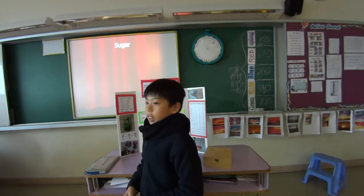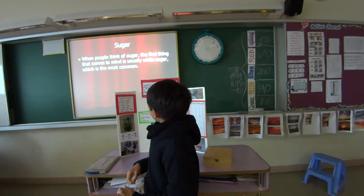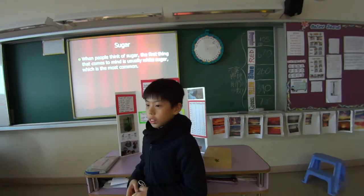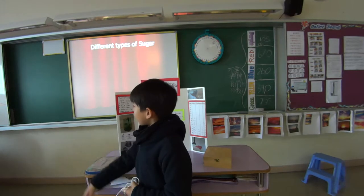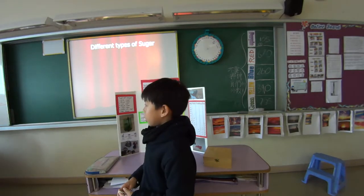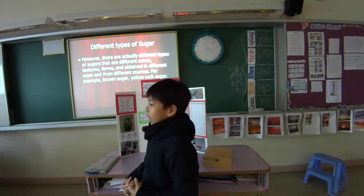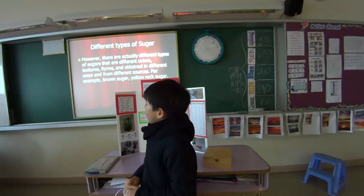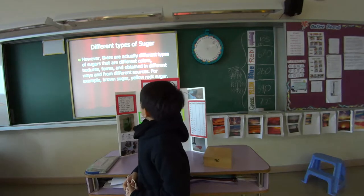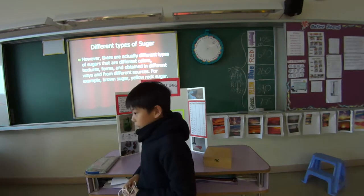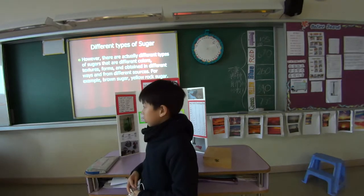Sugar. When people think of sugar, the first thing that comes to mind is white sugar, because it is the most common and you always see it in the supermarket. However, there are different types of sugar that have different types of texture, color, and forms. Some of the sugars are yellow sugar, rock sugar, and brown sugar.